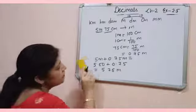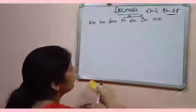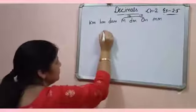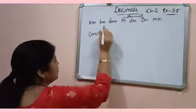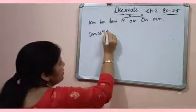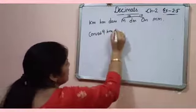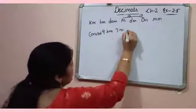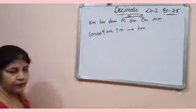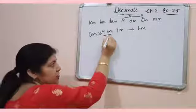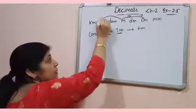Is that clear? Now let's take one more example. Convert 9 hectometer 7 meter into hectometer. Now look, it is already in hectometer. So you have to convert meter into hectometer.